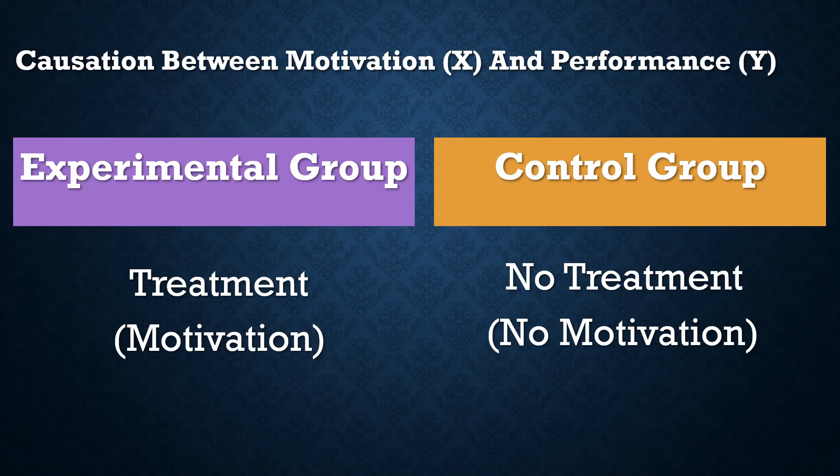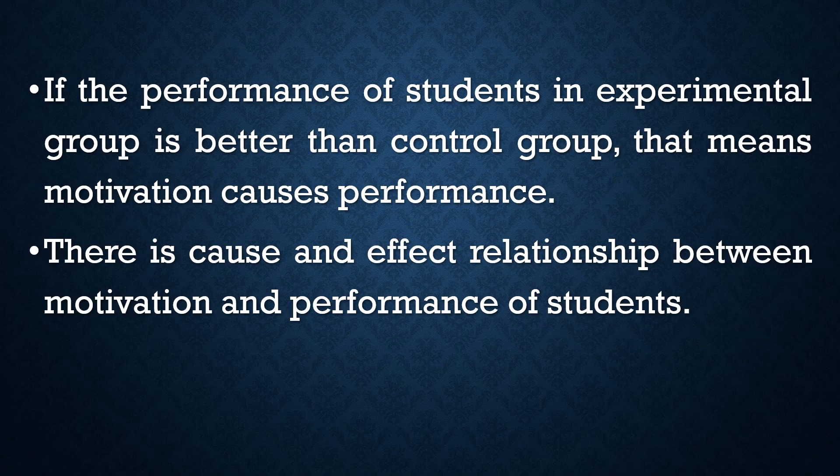For example, to examine causation between motivation and performance, there are two groups: experimental and control. Students in the experimental group will be given motivation, whereas students in the control group will not be given any motivation. All other things are identical in both groups. After the intervention, if the performance of students in the experimental group is better than in the control group, that means motivation — the only factor that differs — causes performance. This establishes a clear cause and effect relationship between motivation and performance.